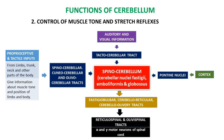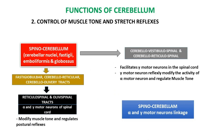Efferents coming out of the spinocerebellum from nucleus fastigii, nucleus emboliformis, and nucleus globosus via fastigiobulbar, cerebelloreticular, and cerebello-olivary tracts reach alpha and gamma motor neurons of the spinal cord via reticulospinal and olivospinal tracts. Through this pathway, it modifies muscle tone and regulates postural reflexes. Through cerebellovestibulospinal and cerebelloreticulospinal pathways, it facilitates gamma motor neurons in the spinal cord. These gamma motor neurons reflexly modify the activity of alpha motor neurons and regulate muscle tone. The spinocerebellum is the site of alpha and gamma motor neuron linkage.